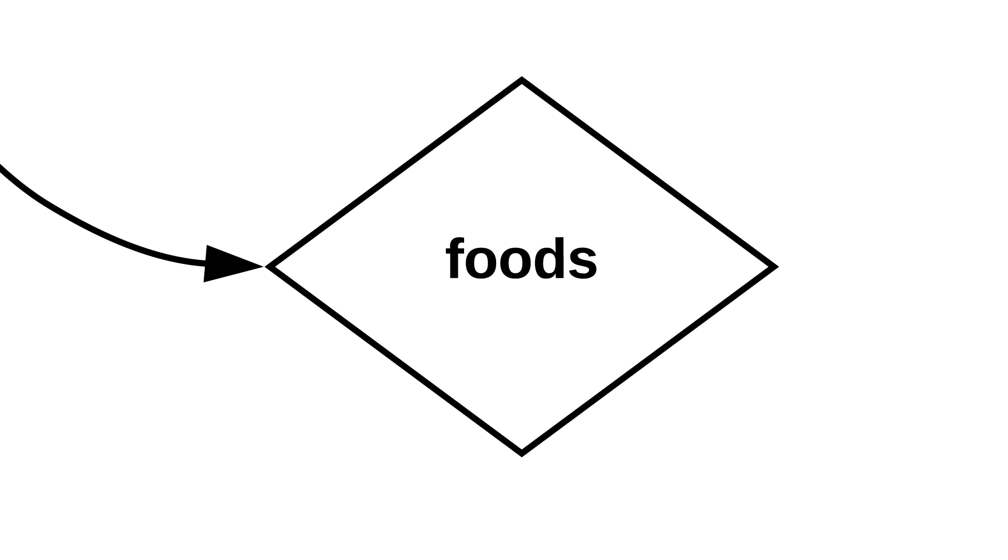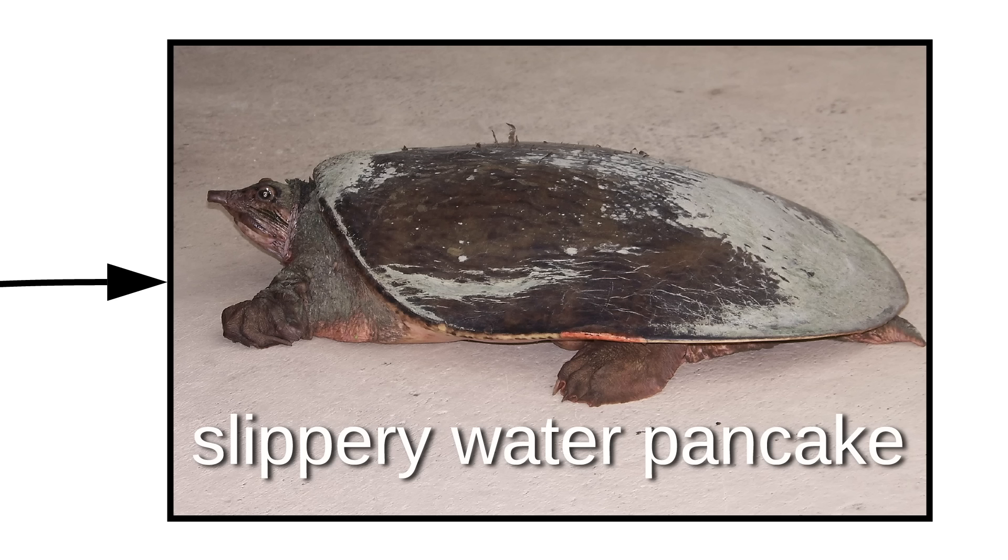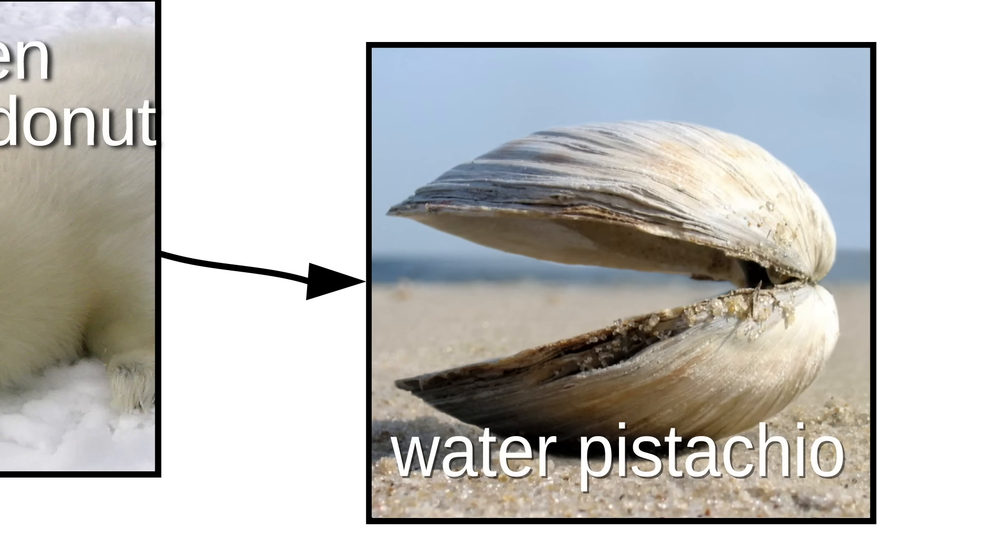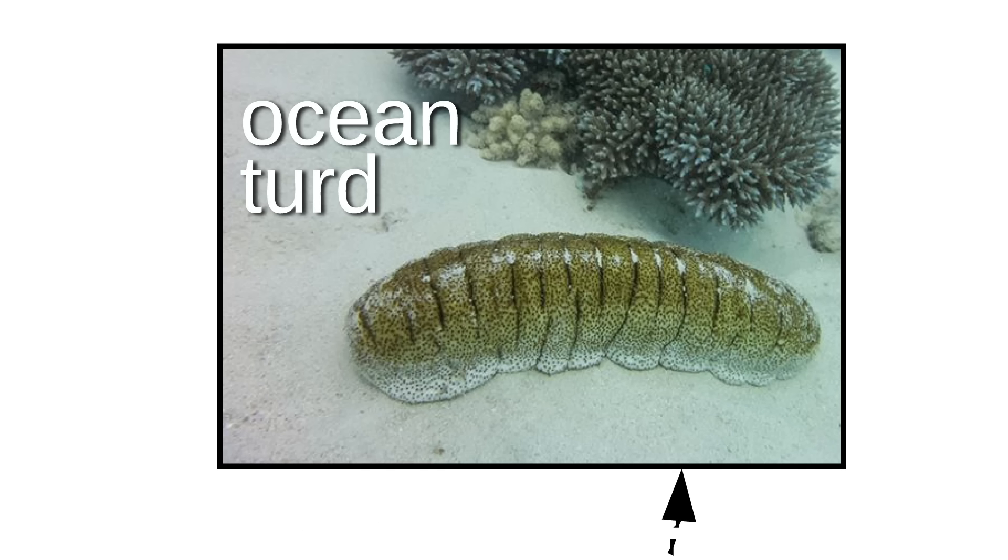Some aqua animals are named after foods, like the floaty potato, slippery water pancake, forbidden powdered donut, and the water pistachio. By the way, don't step on an ocean turd.